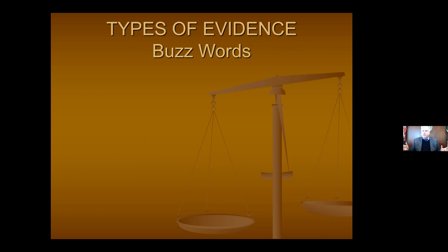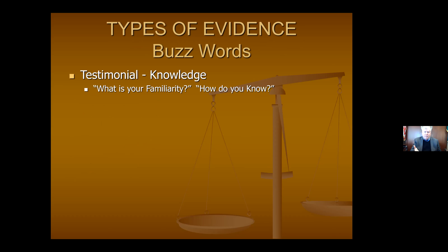Now let's talk about the four types of evidence. The first is testimonial evidence — a witness testifying under oath. The witness has to be competent and must have knowledge about the thing they're testifying about; they can't just be making things up. The key buzzword here is 'knowledge.' Does the witness have knowledge of what they're testifying about? So you might ask: what's your familiarity with X, how do you know about Y, or when were you at this location? Those questions establish the witness's knowledge base.